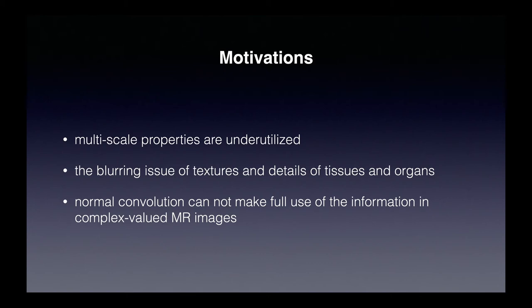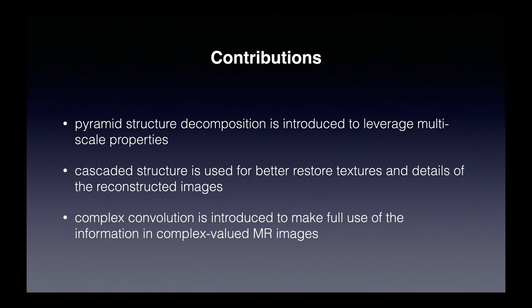In order to address these problems, in this paper we propose the following methods. First, pyramid structure decomposition is introduced to leverage multi-scale properties. Second, a cascade structure is used for better restored textures and details of the reconstructed images. Last, complex convolution is introduced to make full use of the information in complex-valued MRI images.